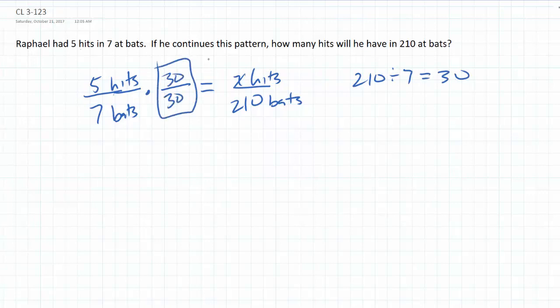5 times 30 is 150. So he will have 150 hits.